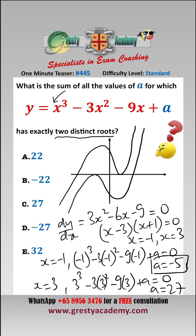And that gives us a equals 27. So they are the two values of a for which there are exactly two distinct roots, and we want the sum of the values of a. 27 minus negative 5 is 22, which is answer A.